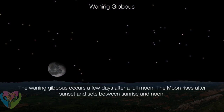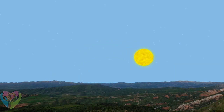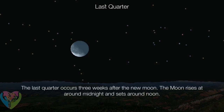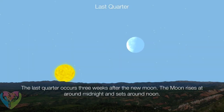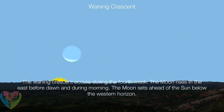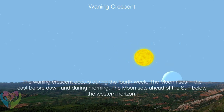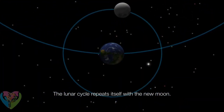The waning gibbous occurs a few days after a full moon — the Moon rises after sunset and sets between sunrise and noon. The last quarter occurs three weeks after the new moon; the Moon rises around midnight and sets around noon. The waning crescent occurs during the fourth week — the Moon rises in the east before dawn, and sets ahead of the Sun below the western horizon. The lunar cycle repeats itself with each new moon.